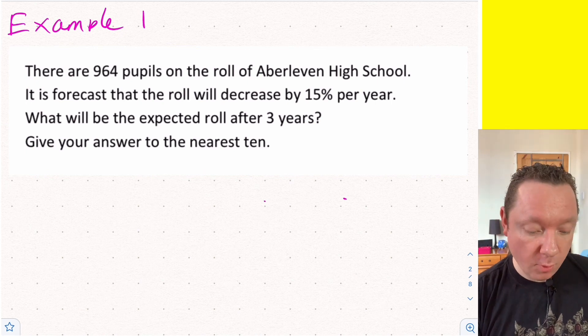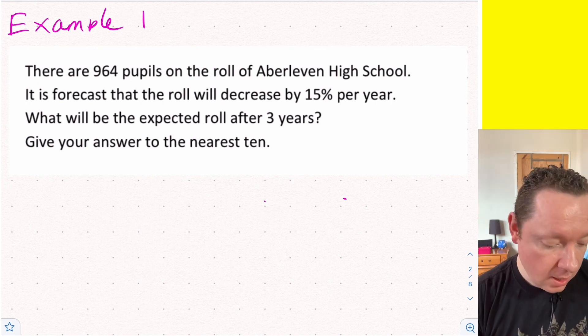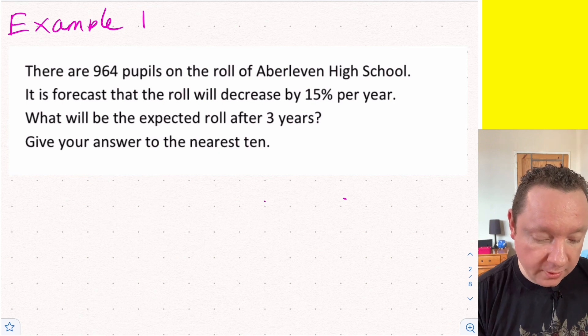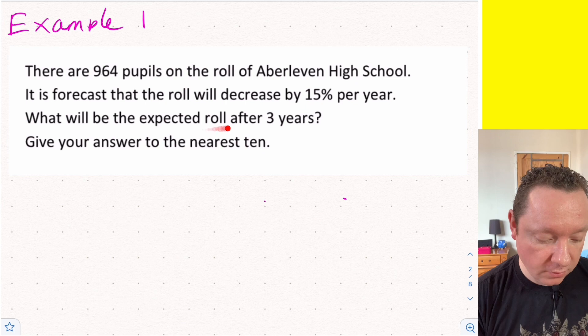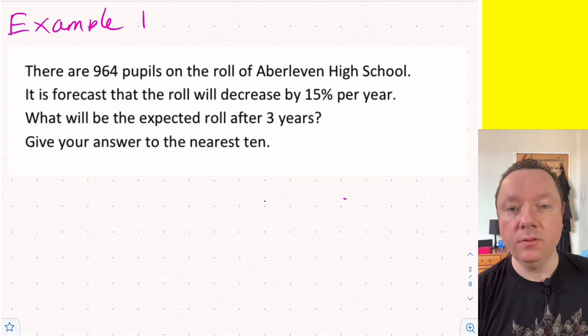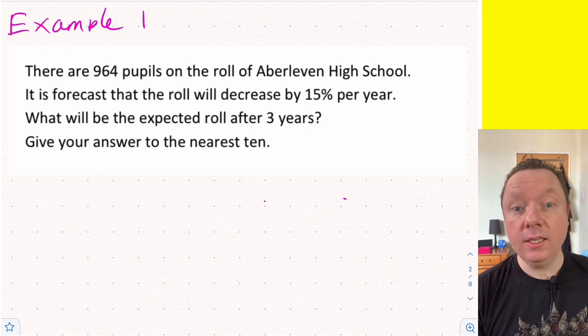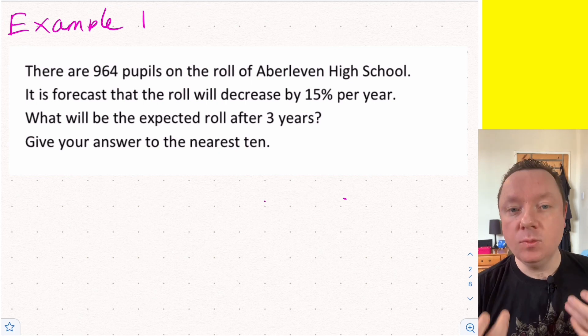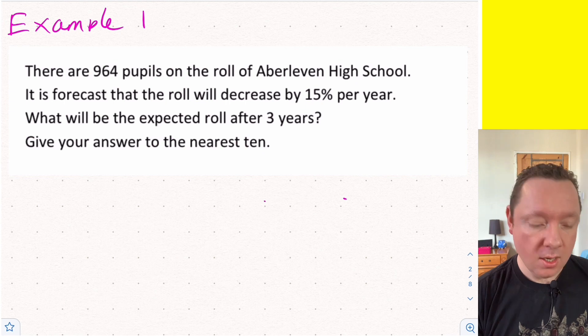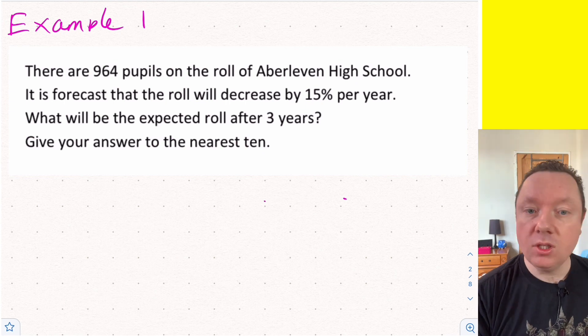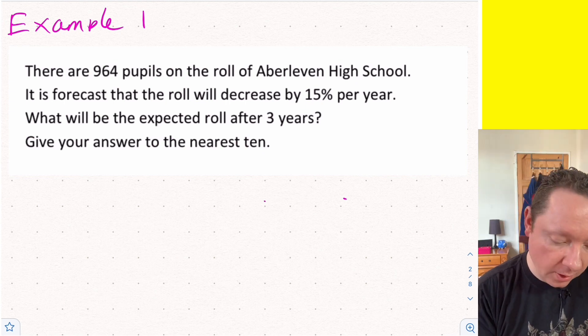Let's start off with appreciation or depreciation with a quick example. Example 1: There are 964 pupils on the roll at Aberleven High School. It is forecast the roll will decrease by 15% per year. What is expected roll after 3 years? Round your answer to the nearest ten. With a question like this, if you notice a time and a percent, it is probably going to be this method - appreciation or depreciation.